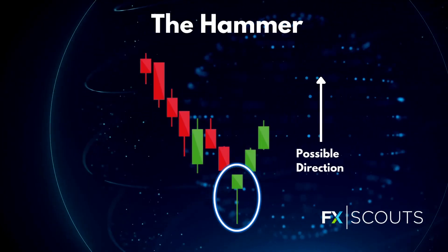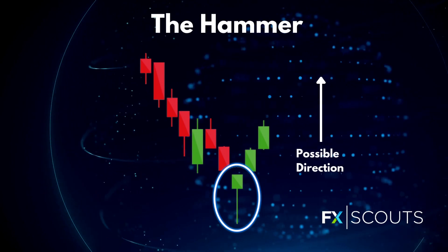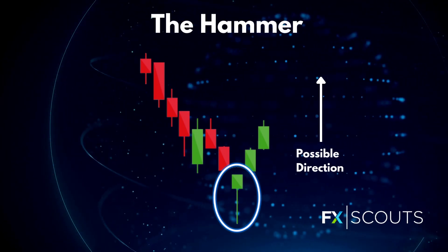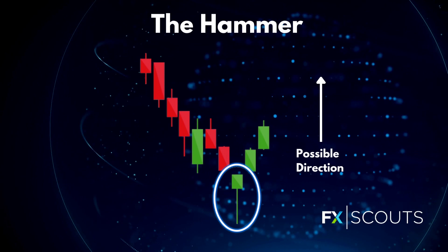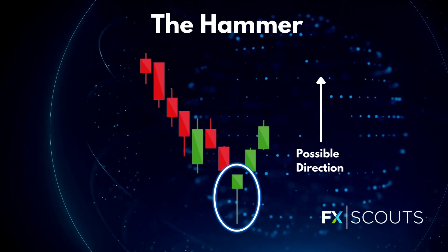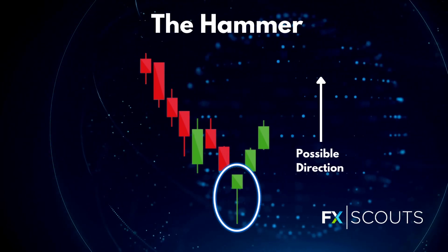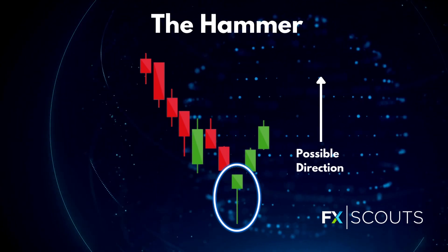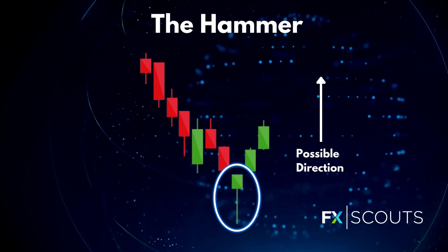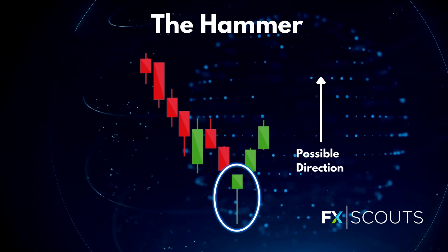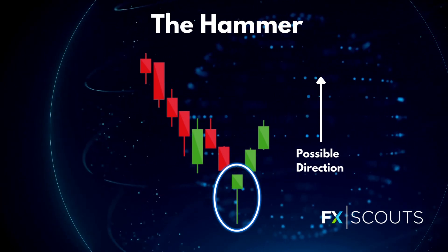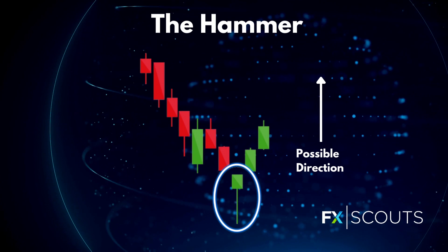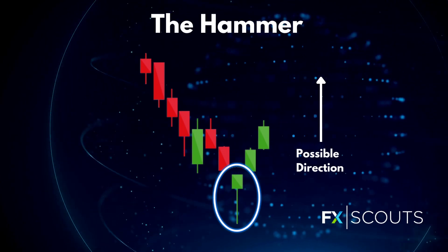The first candlestick pattern we're going to be covering is the hammer. Hammer candlestick patterns consist of a short body with a long lower wick and they're found at the bottom of a downtrend. A hammer shows that although there were selling pressures, ultimately a strong buying pressure drove the price back up. The colour of the body can vary — they can be red or green hammers, but green hammers indicate a stronger bull market than red hammers.